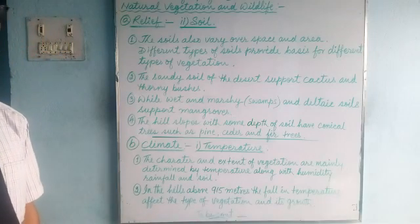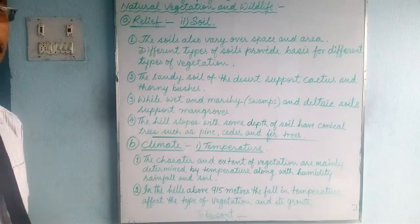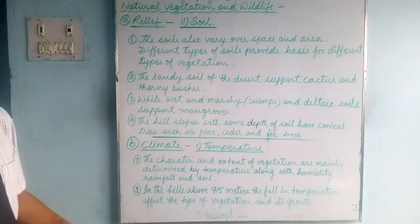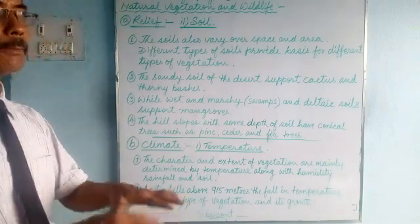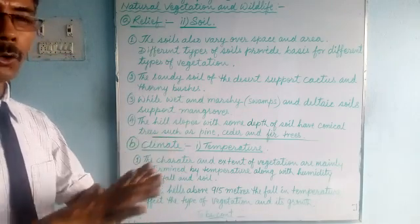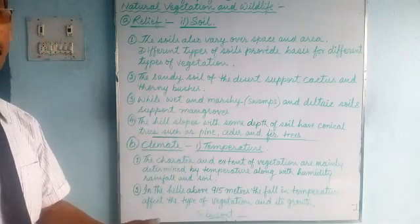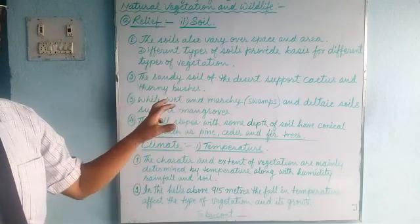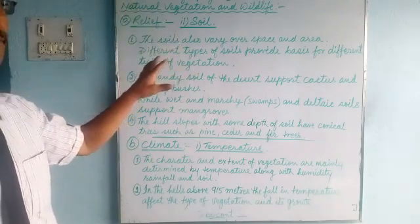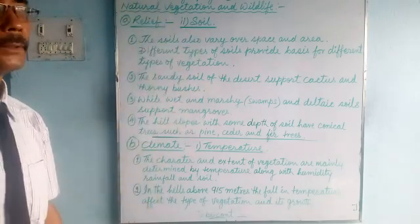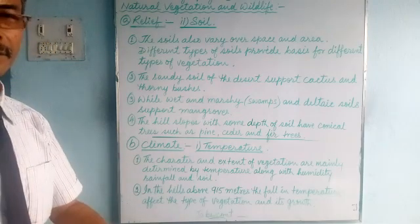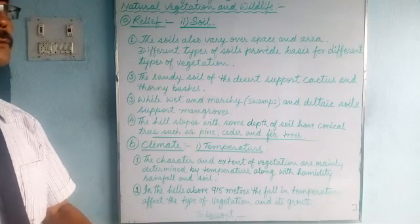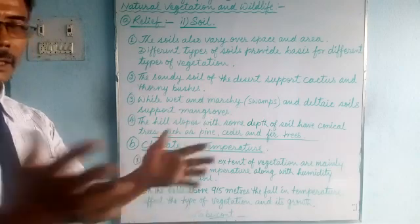According to temperature, soil, rainfall, humidity, and photoperiod, all these factors affect vegetation. And according to the vegetation, wildlife also survives there. In hilly areas above 915 meters, the temperature starts going down, and you find certain types of vegetation. As you go higher, you find another type. Character means whether the plants are tall or sturdy, and extent means whether they grow densely or thinly — both are determined by these combined factors.